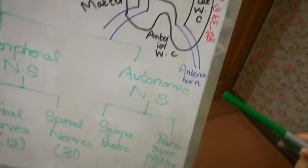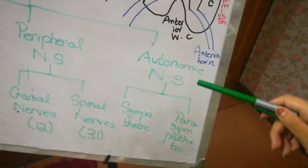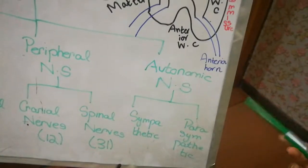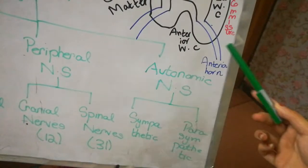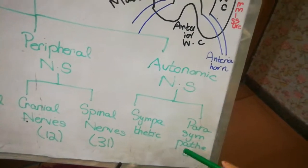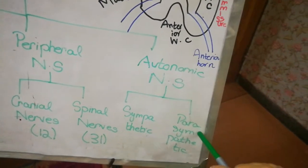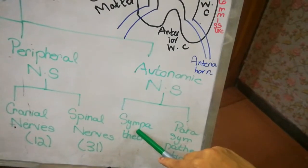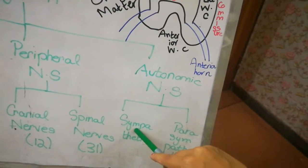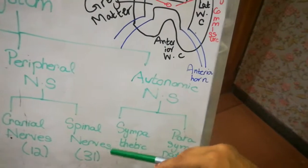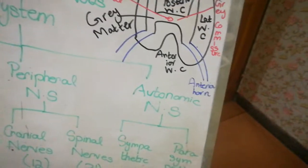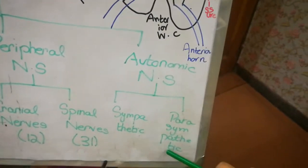Then coming to the last: autonomic nervous system. You may be familiar, as we studied in high school, about the autonomic nervous system divided into two: the sympathetic nervous system and parasympathetic nervous system.